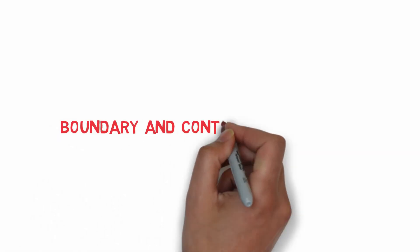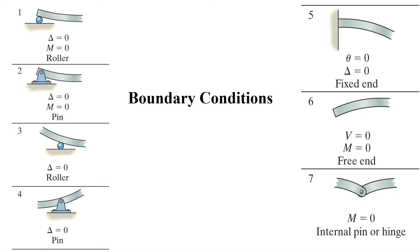Now we look at boundary and continuity conditions. For roller and pin supports, deflection must be zero. If roller and pin supports are located at the ends of the beam, the internal moment must also be zero. At a fixed support, both displacement and slope are zero. At a free-ended beam, both shear and moment are zero. Finally, the moment must be zero at internal pin or hinge connections.